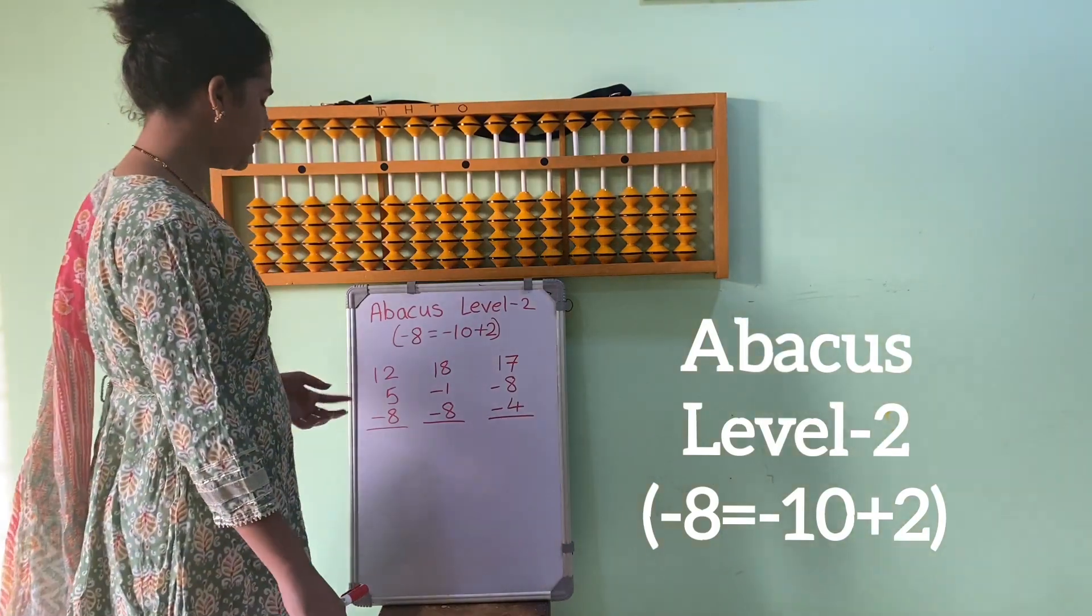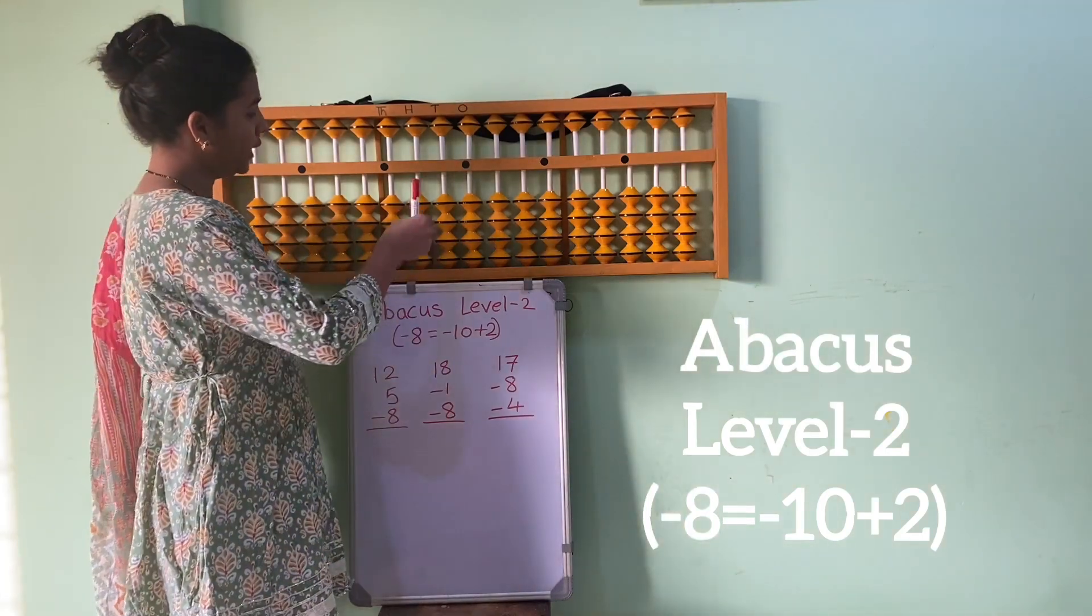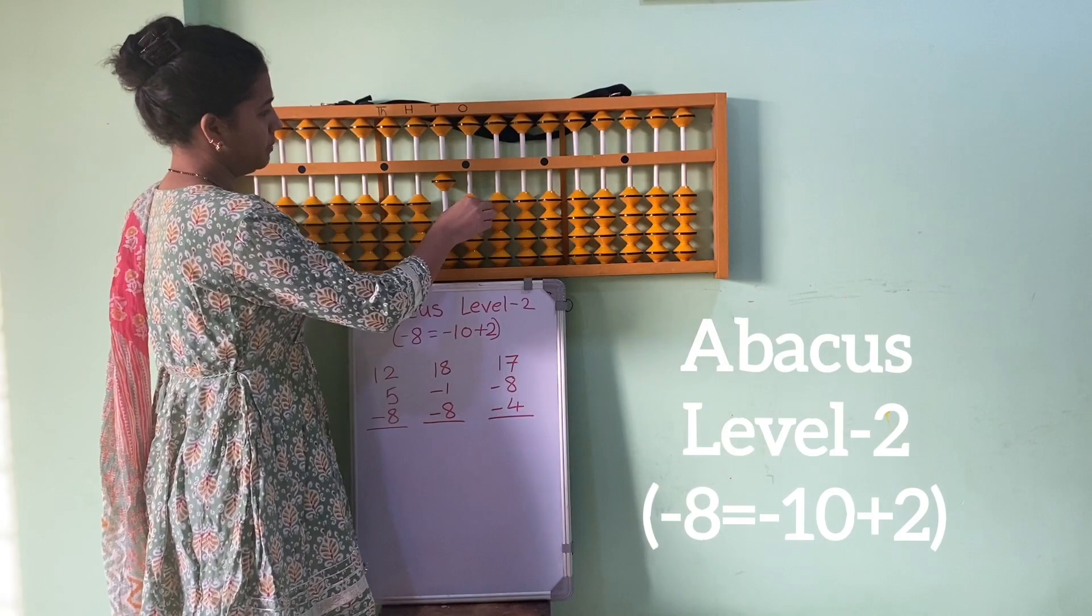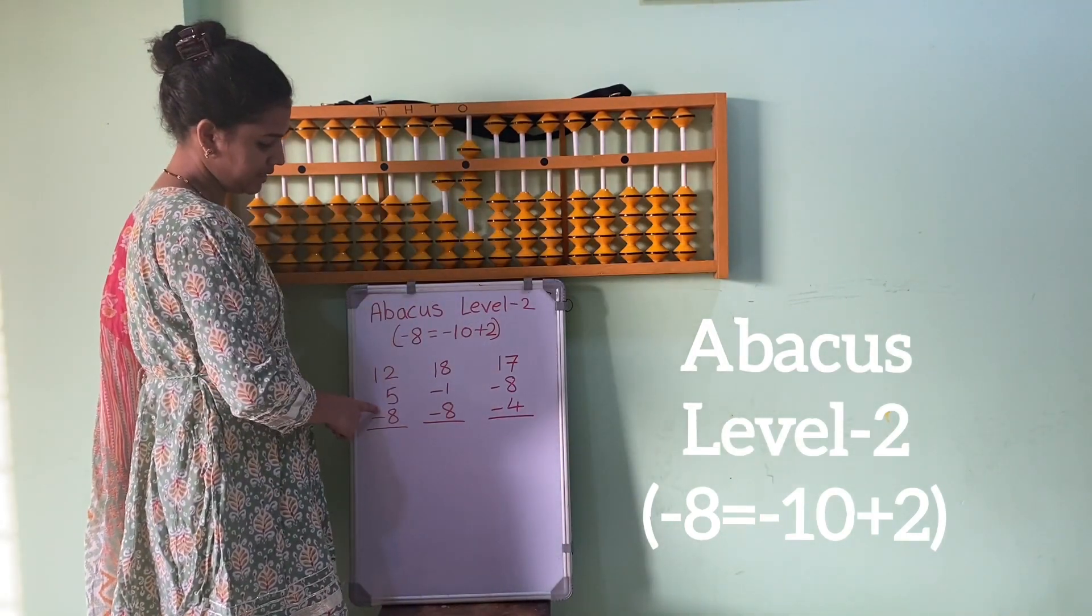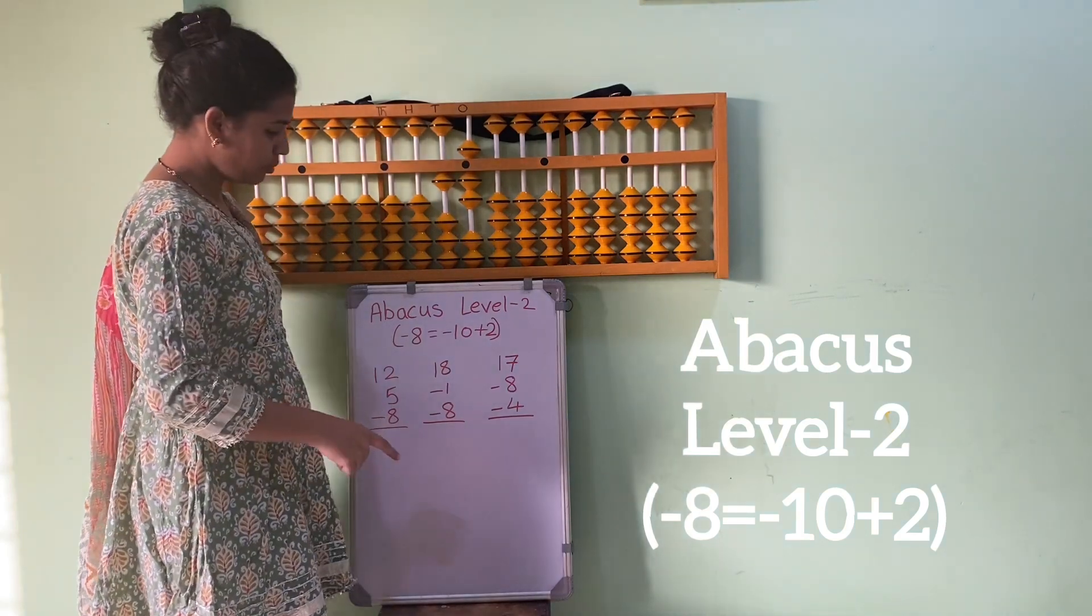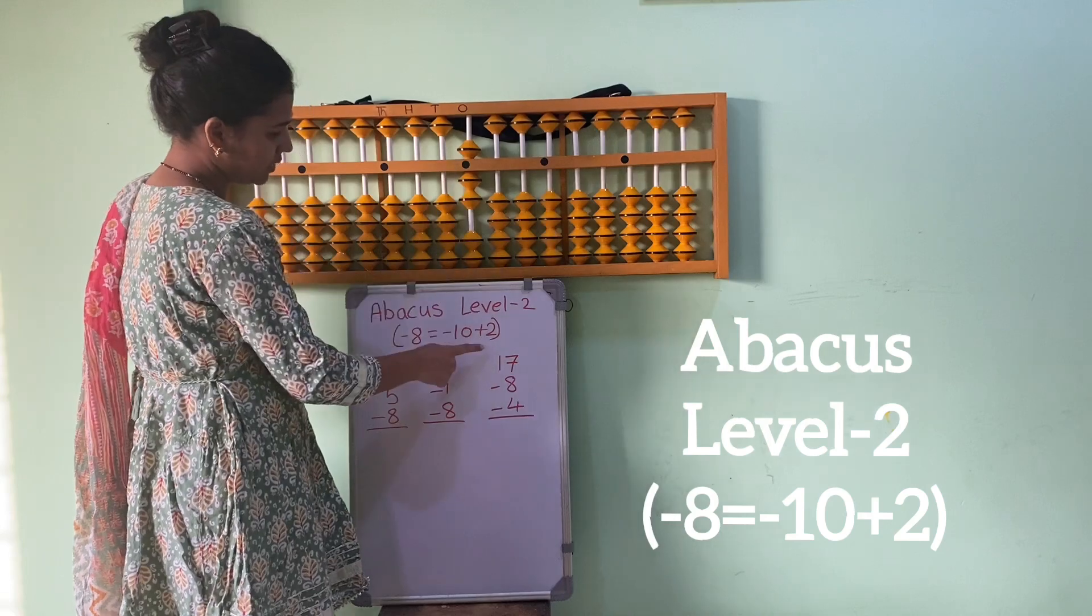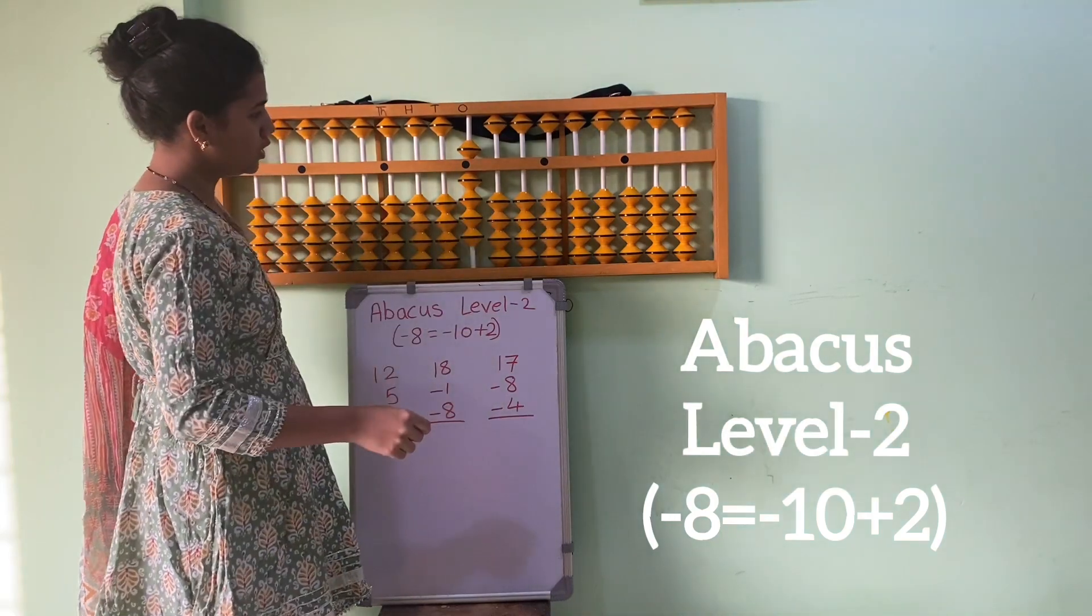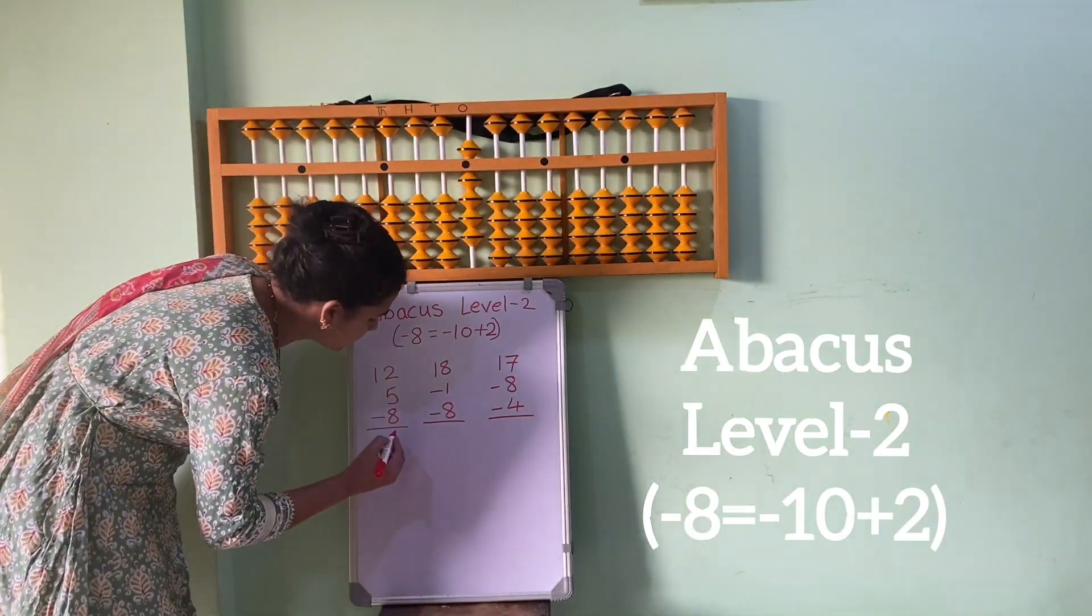Let's see the sum: 12. In one's place, 1 plus 2 equals 1, 2. Plus 5 in one's place, minus 8. So minus 8 ka formula kya hai humara? Minus 10 plus 2, 1, 2. So what we got the answer? 9.